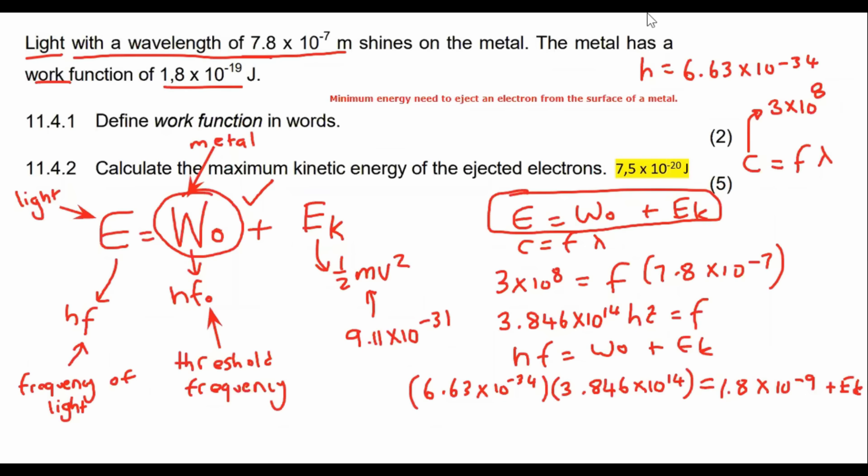Now it's just a matter of solving for Eₖ. And if you had to solve for Eₖ, we should find that you get Eₖ is equal to 7.5 times 10 to the power of minus 20, and that would be measured in joules.